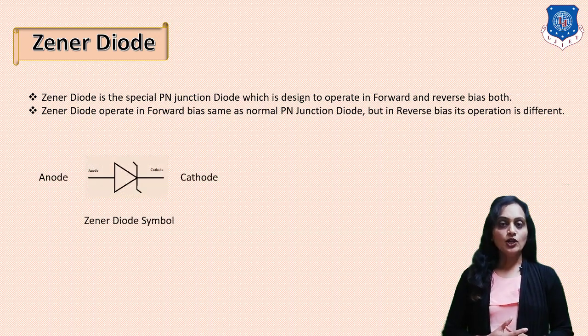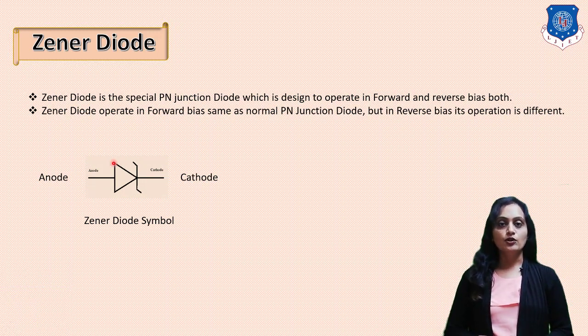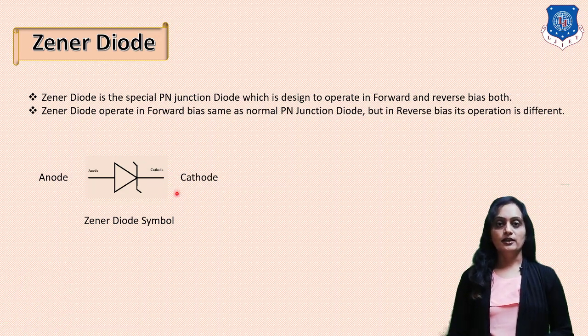The symbolic representation for the Zener diode is as shown in the figure. You will find that the flat side is the anode terminal and the opposite side is the cathode terminal.